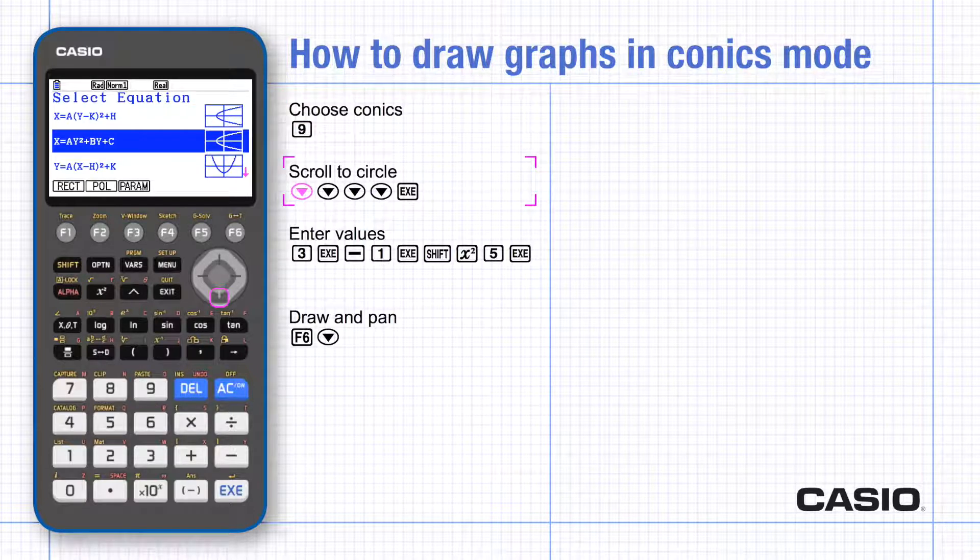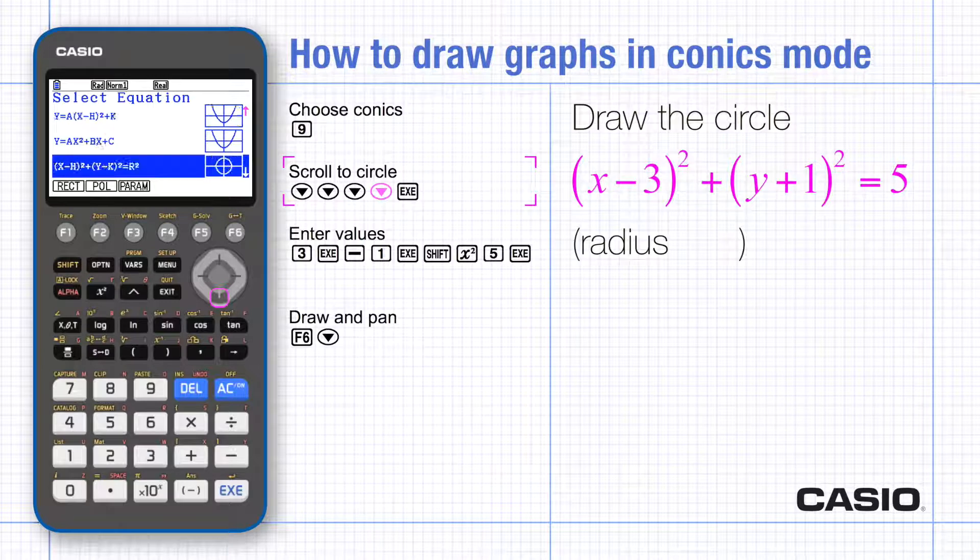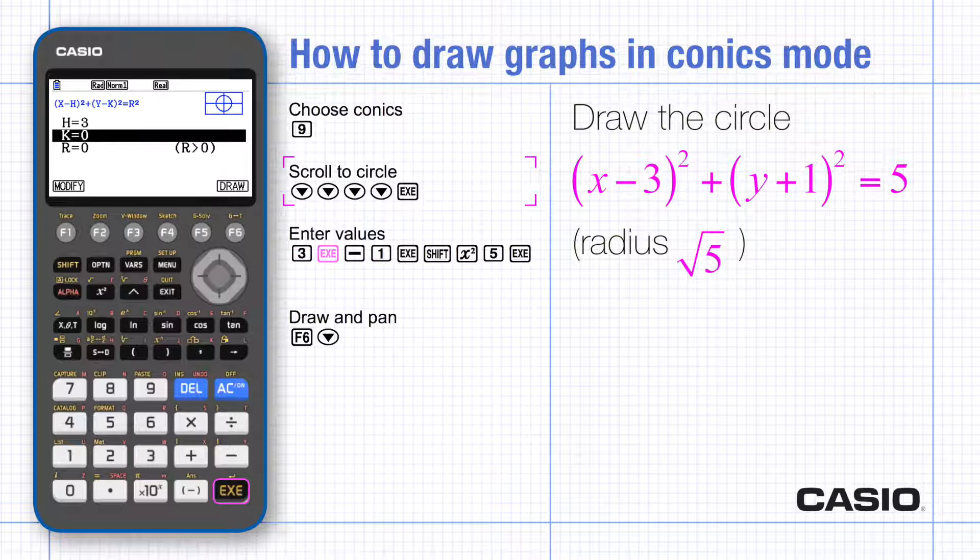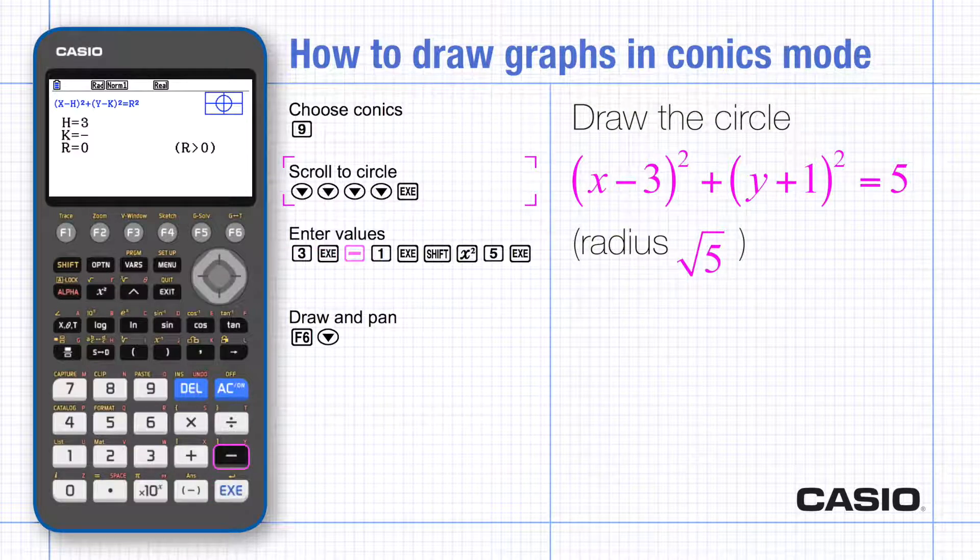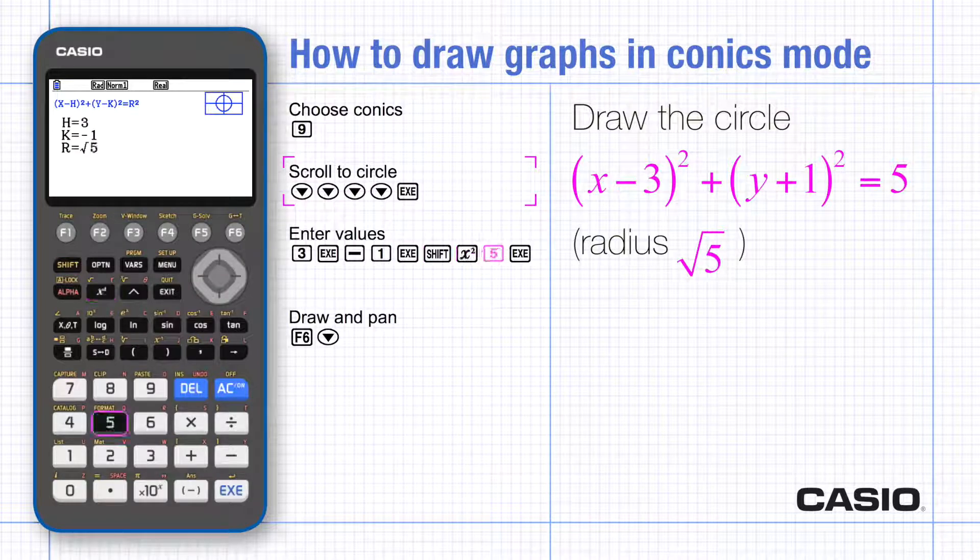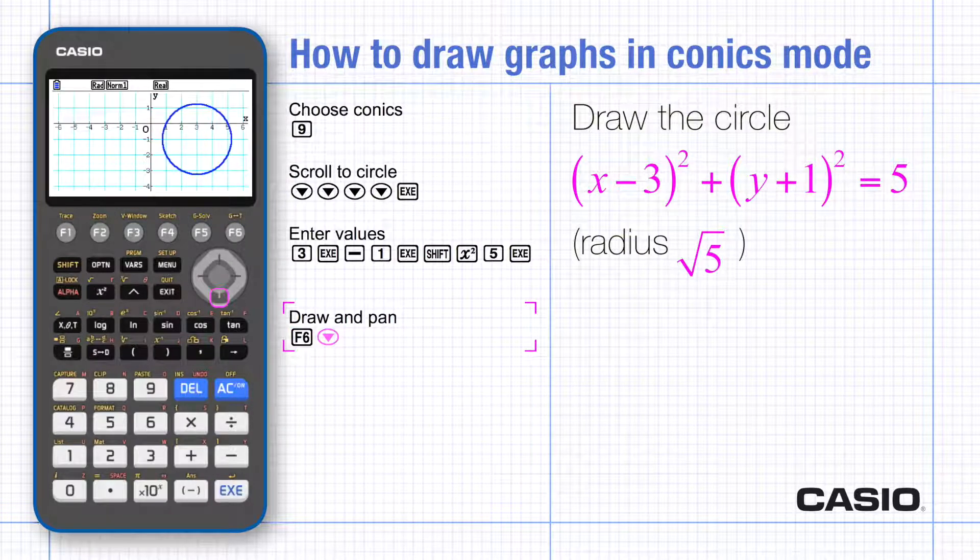Choose conics mode and scroll down to the circle equation and execute. Type the values 3 for h, negative 1 for k, and root 5 for r, and execute. Press draw to enter the graph mode and pan up to see the complete circle.